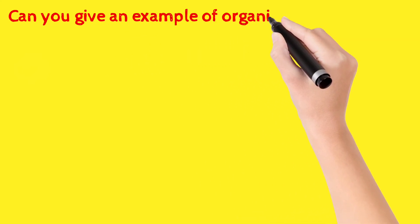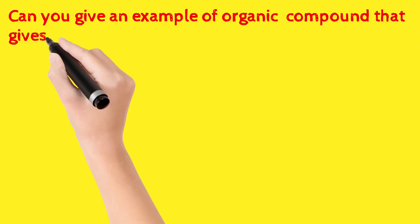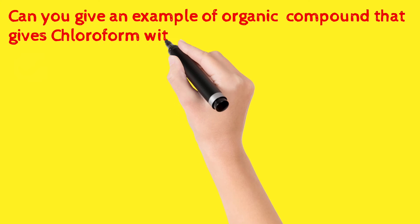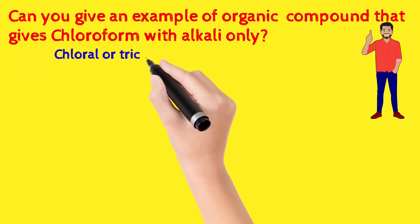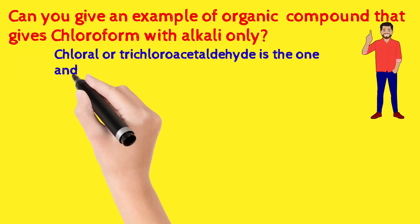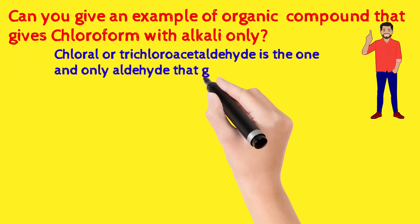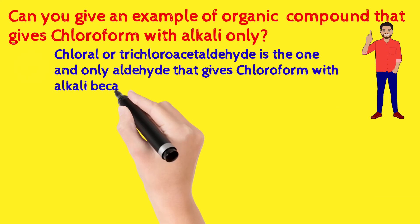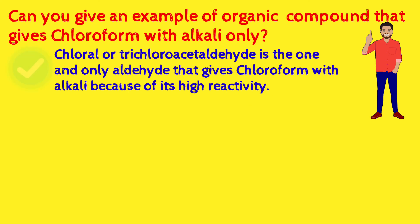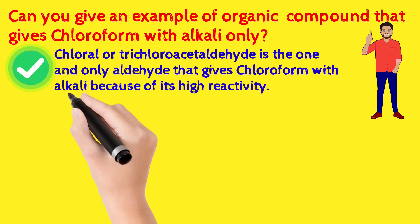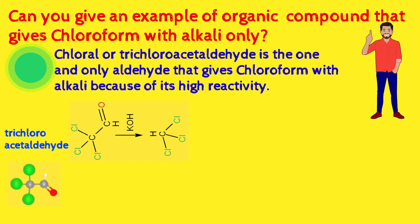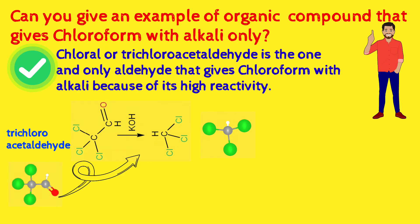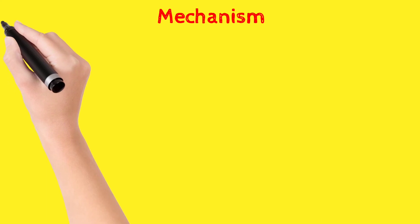Is it necessary to perform the haloform reaction through addition of halogen? Can you give an example of an organic compound that gives chloroform with alkali only? Yes — chloral, or trichloroacetaldehyde, is the one and only one aldehyde that is a halogen derivative of acetaldehyde and produces chloroform on treatment with alkali alone. So without adding external halogen, we can use the halogen derivative of an aldehyde — trichloroacetaldehyde on treatment with potassium hydroxide produces chloroform — and this happens because of the higher energetic state.